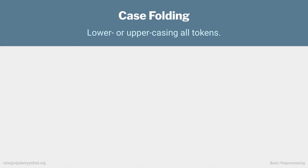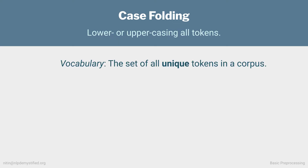Starting off with a simple one: case folding, which is just making sure all the tokens have the same case, whether it's lower or uppercase. Why would we want to do something like this? When we tokenize a corpus, we create a vocabulary — the set of all unique tokens in our corpus. And case folding can affect both the vocabulary and the downstream results.